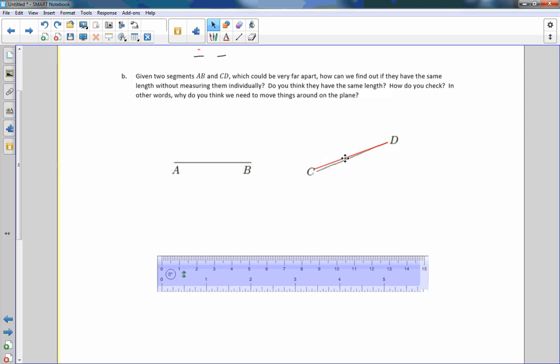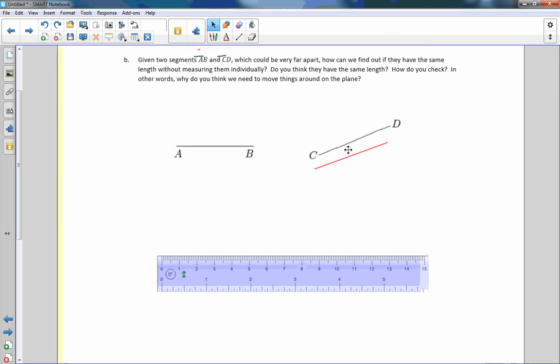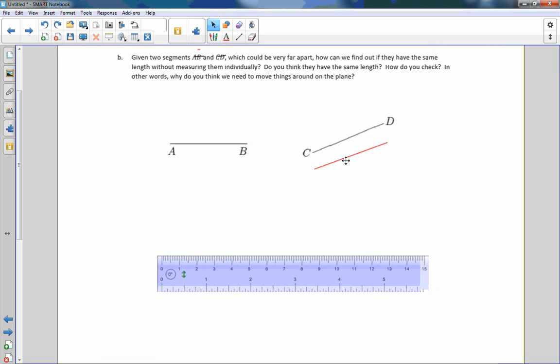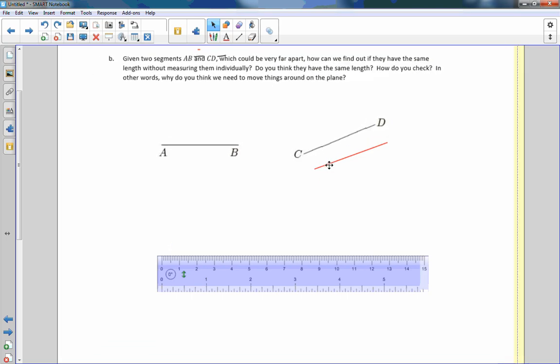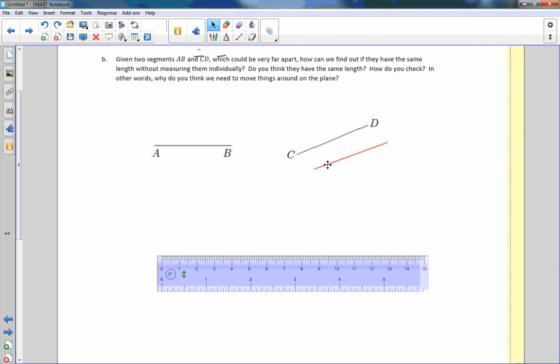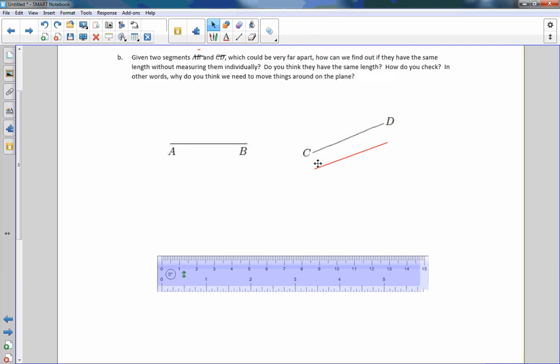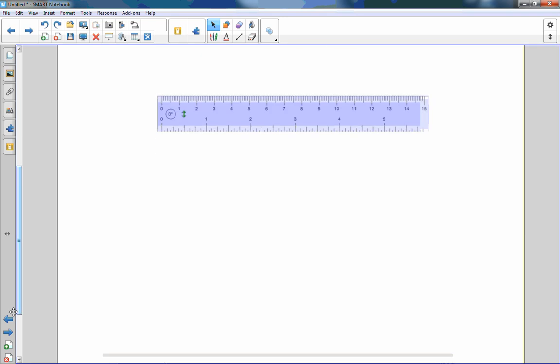Okay. It won't allow me to rotate the exact degree, but you can see that these two lengths are the same by copying it and moving. If you were to do this with a transparency, you'd be moving the transparency over there. Okay. So that's how you check. Copy the image, move the image over onto the other one. And that's how we moved it around the plane.